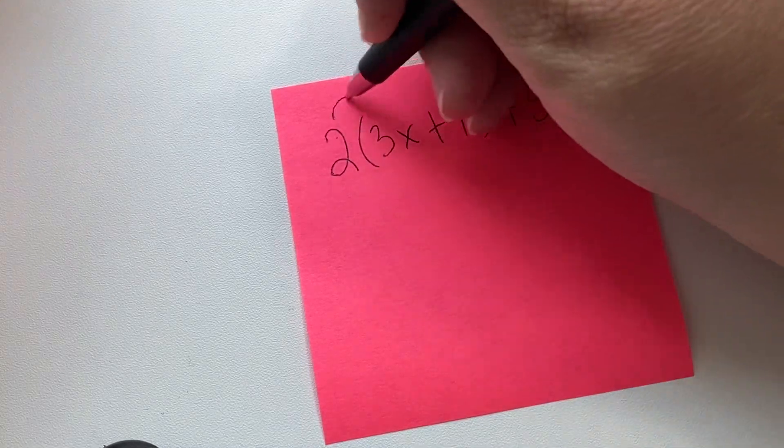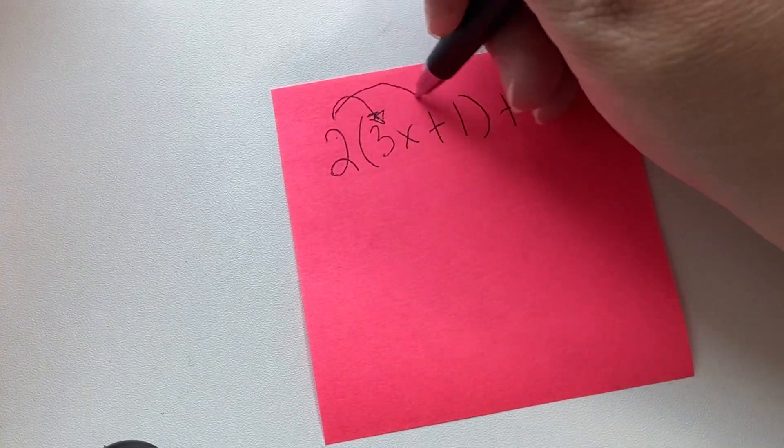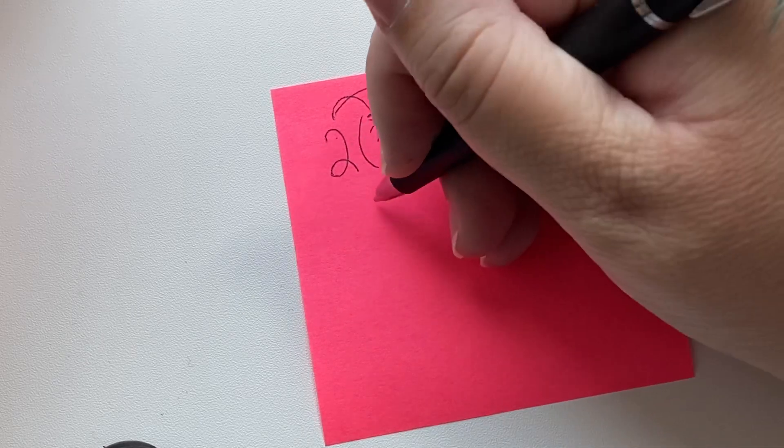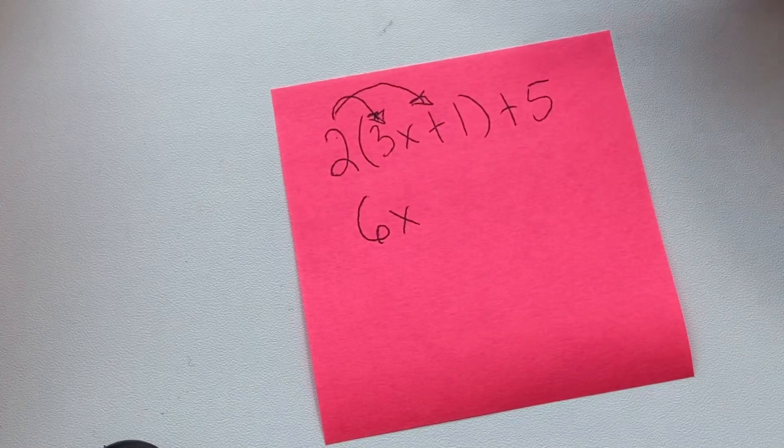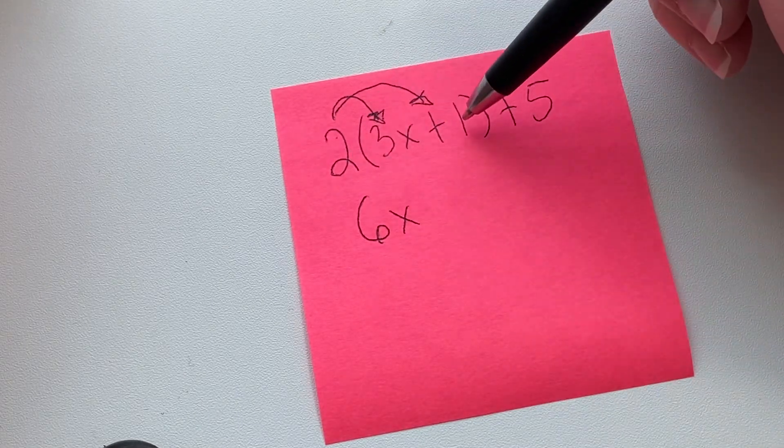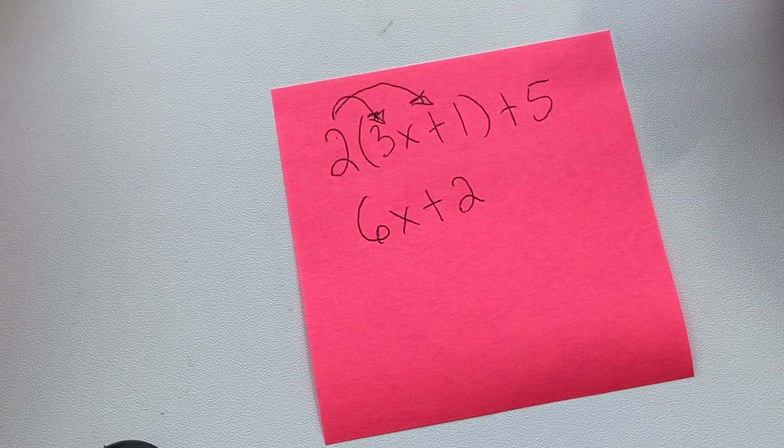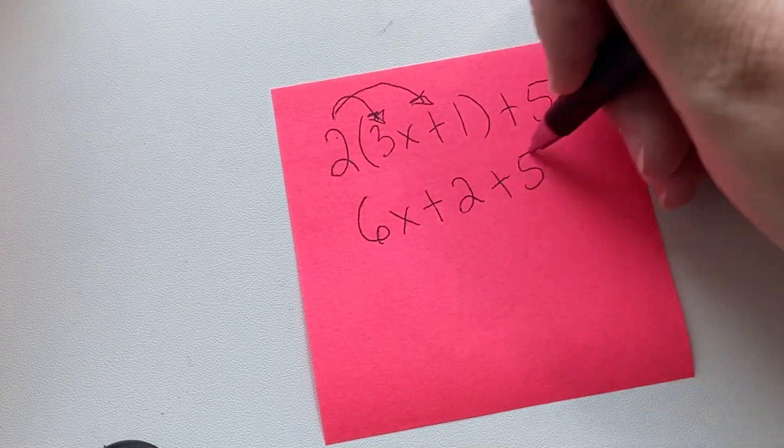Let's do what we are getting so good at doing and distribute our 2 to our 3x. We have 6x. Then distribute our 2 times our 1, so we have plus 2. Then we keep the